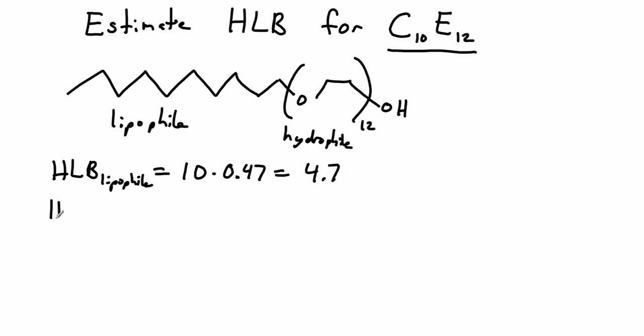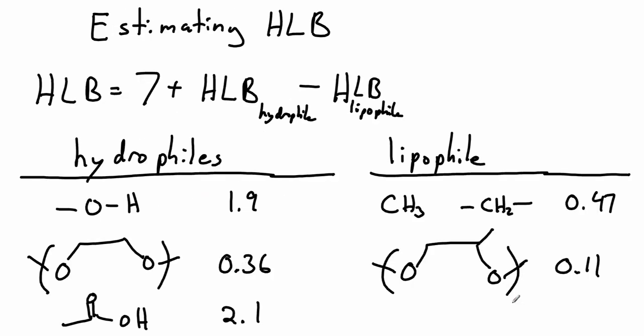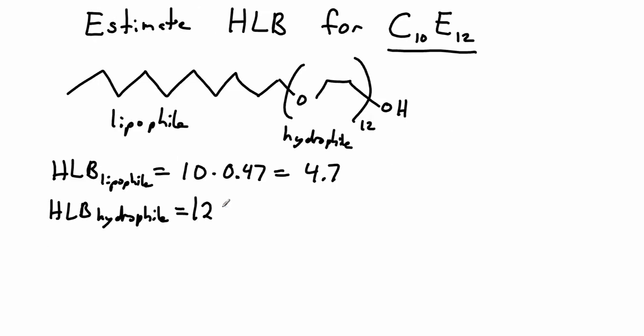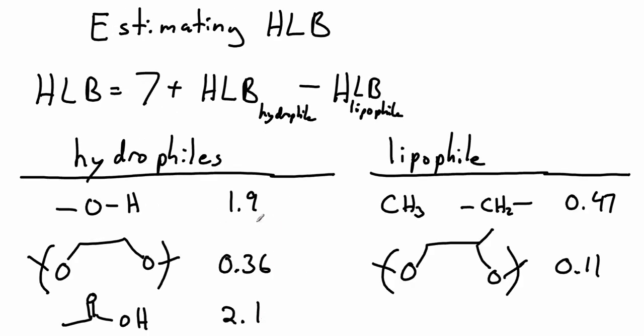Then we have to do our HLB for our hydrophile. We have 12 of these ethylene oxide units. If we go back to our table, we see each residue of ethylene oxide is going to be 0.36. We also have this free hydroxyl over here. Looking back at the table, we see that it's going to be 1.9.